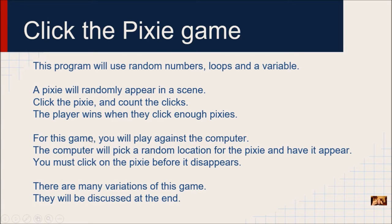This is a one-player game. You're going to play against the computer. The computer picks a random location for the pixie or animal and makes it appear, then it will disappear, and you have to try and click it before that happens. There are many variations to the game, which we'll discuss at the end.